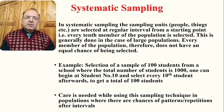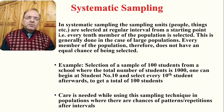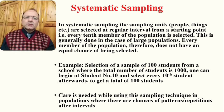In systematic sampling, every member of the population does not have an equal chance of being selected, so there may be an issue of representation. However, because we need to deal with bigger populations, this is one of the ways selection from larger populations is possible. For example, one can begin at student number 10 and select every 10th student afterwards to get a total of 100 students from a school of 1,000.